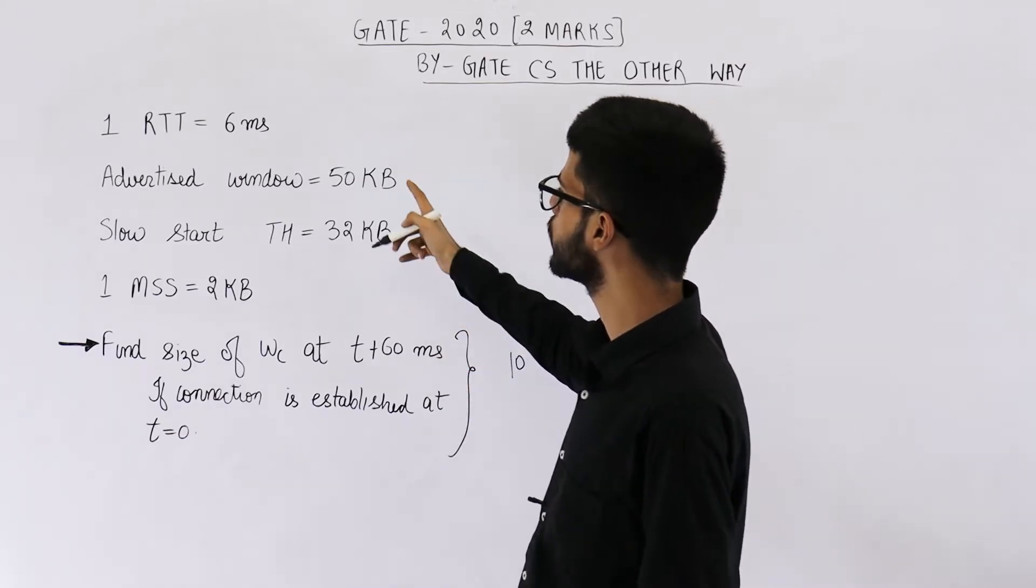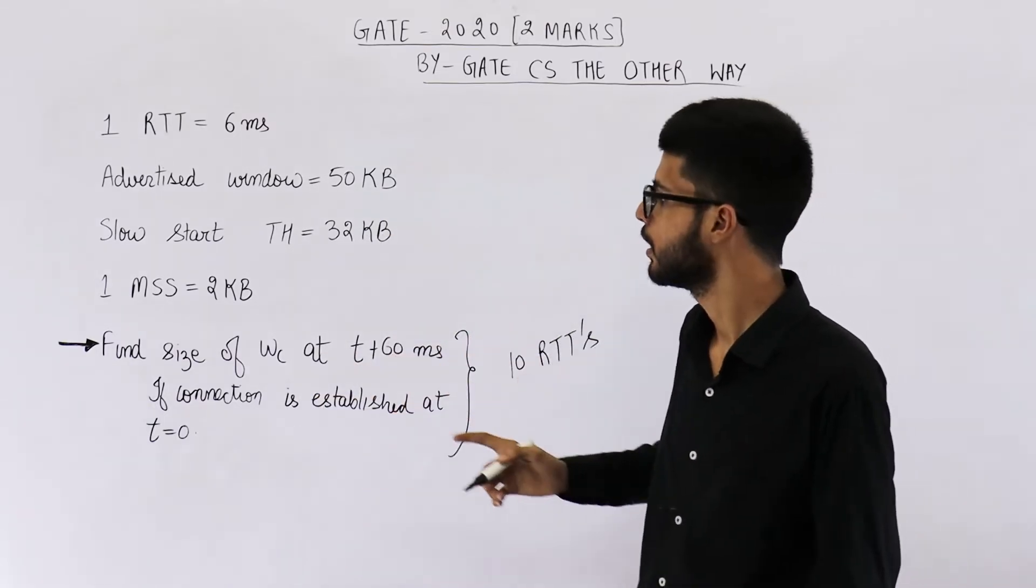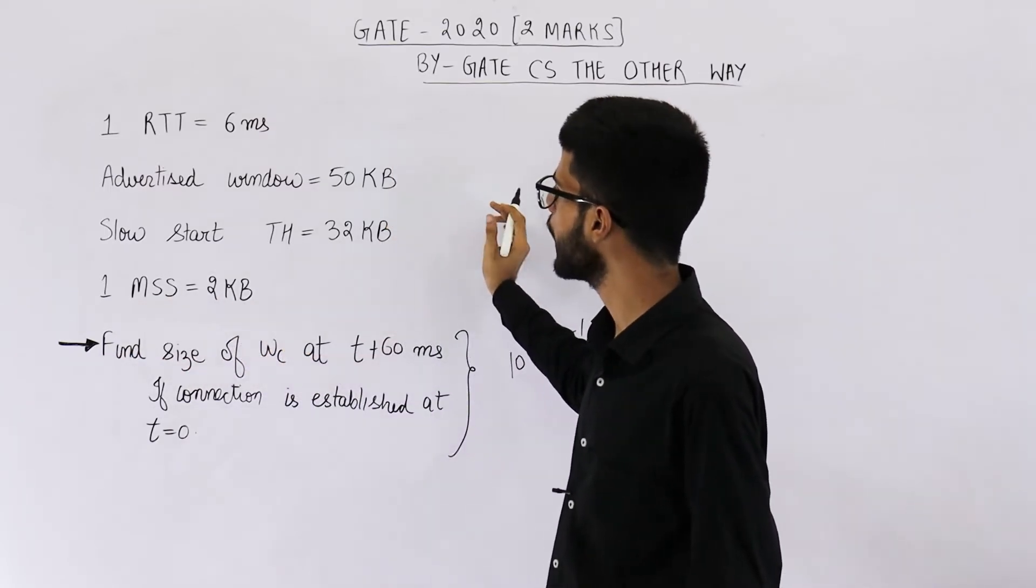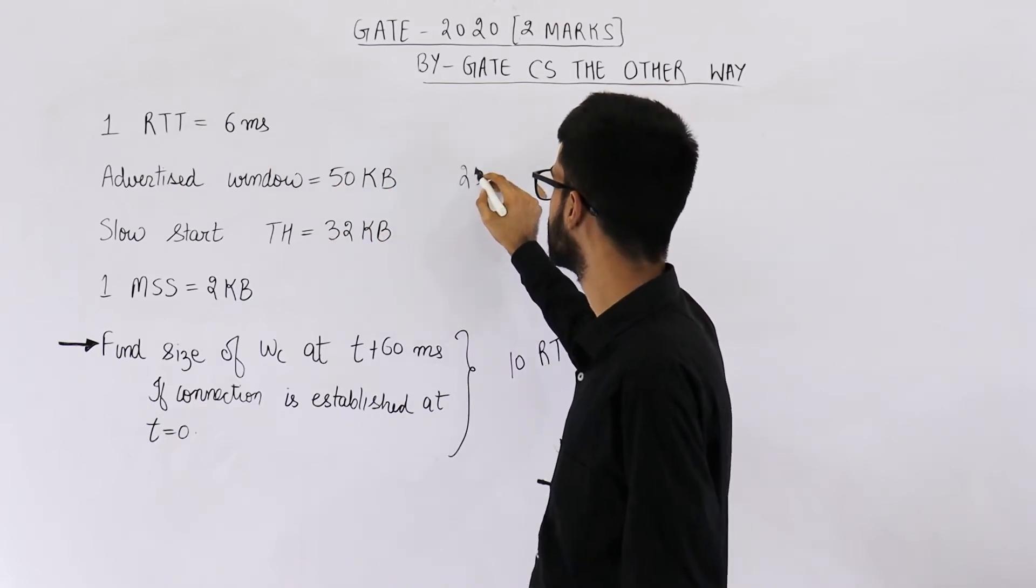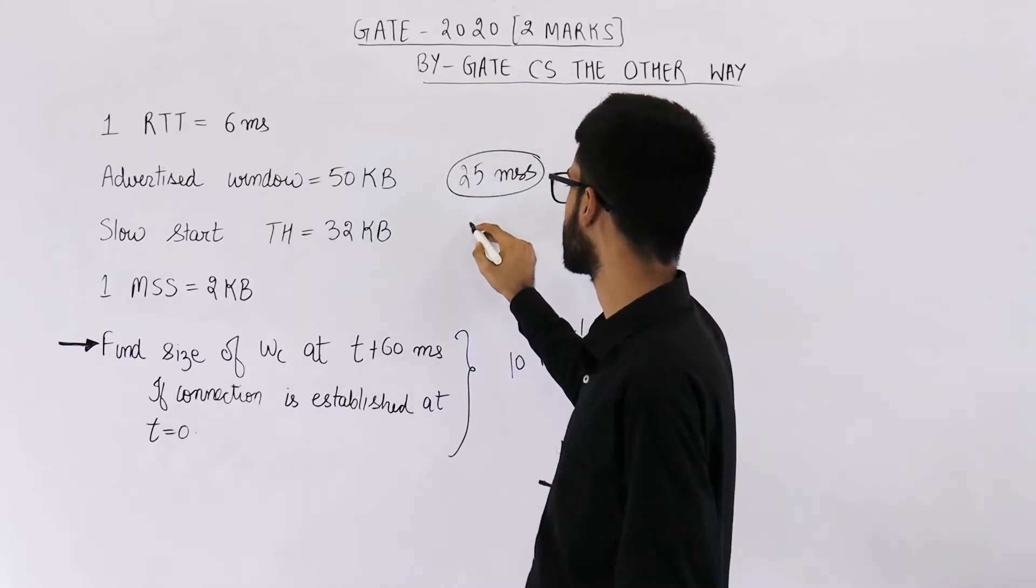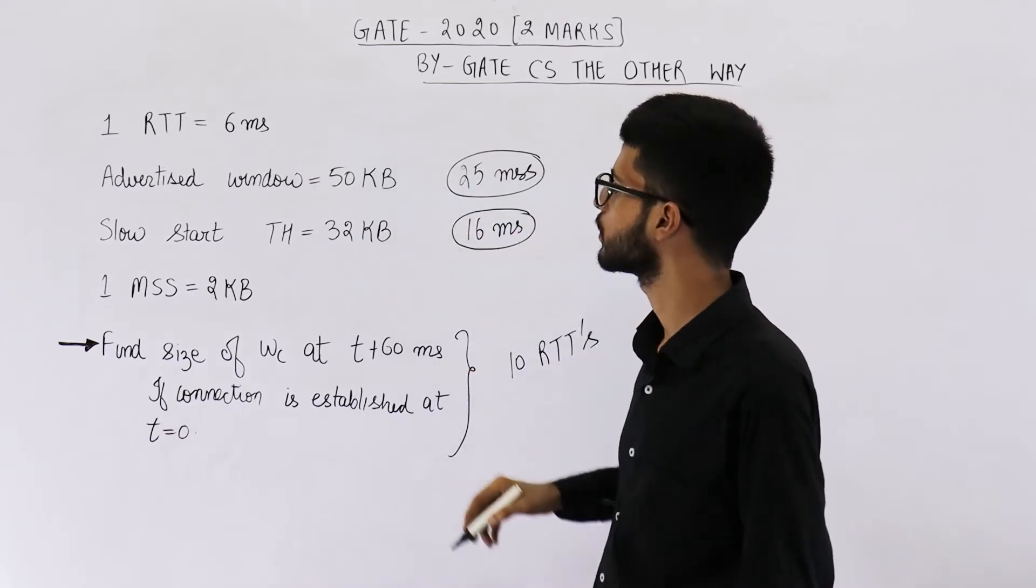Now convert all of these sizes into MSS or maximum segment size. Size of one MSS is 2 KB. How many MSS will be 50 KB? It will be 50 upon 2, that is 25 MSS. This threshold will be 16 MSS.